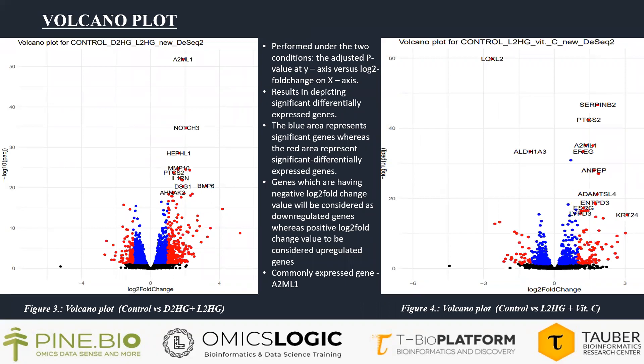The volcano plot was generated under two conditions: adjusted p-value on the y-axis versus log2 fold-change value on the x-axis. This depicts significant differentially expressed genes. The blue area in the volcano plot represents significant genes, whereas the red area represents significant differentially expressed genes. Genes with a negative log2 fold-change are considered down-regulated, while a positive log2 fold-change indicates up-regulated genes. A commonly expressed gene found in both conditions is A2ML1.